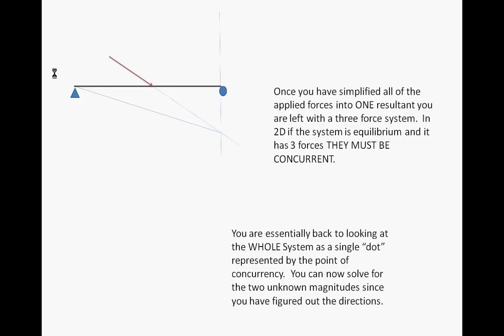Now you're back to essentially looking at the whole system as a single dot in terms of the free body diagram. You actually have a free body and onto it is applied three concurrent forces. You can now solve for the two unknown magnitudes since you have figured out the directions in some way shape or form.